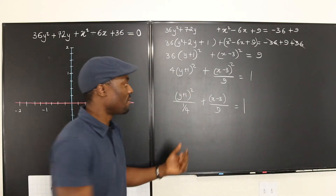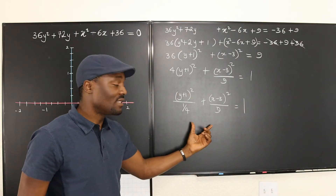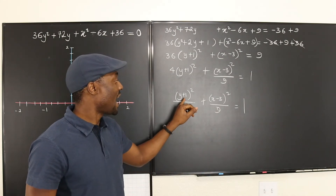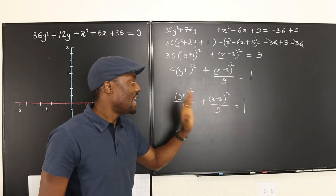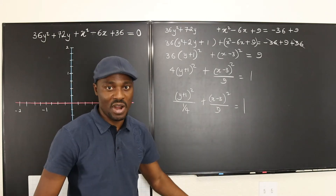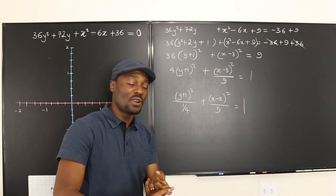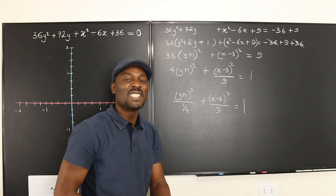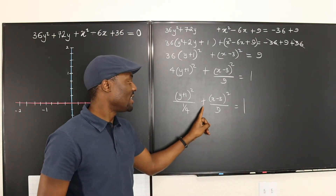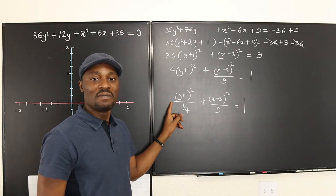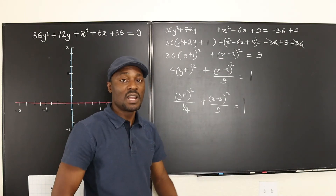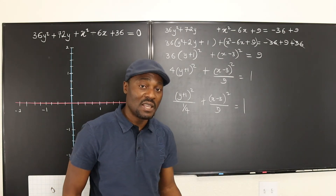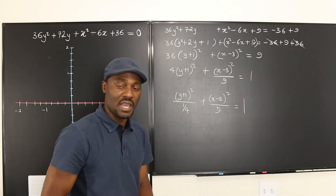This is the standard form of what? Well, it's definitely not a parabola because a parabola has only one squared term. It's not a circle because if it were a circle, these two denominators would be exactly the same — and they're not. It's not a hyperbola because both signs are positive. When the two signs are the same, it's not a hyperbola. Two positives means it's an ellipse. Remember, a circle is a type of ellipse where the two numbers are the same.